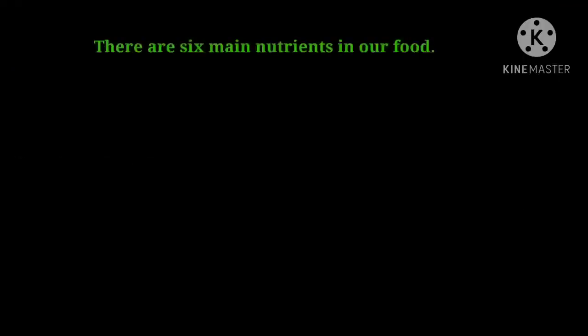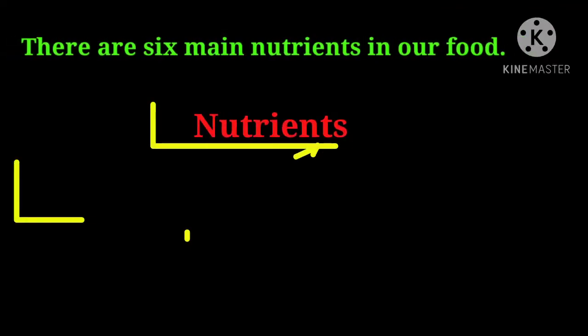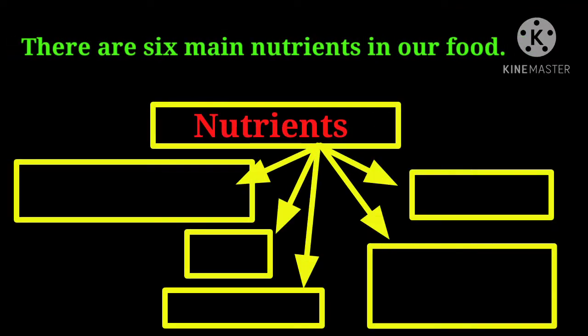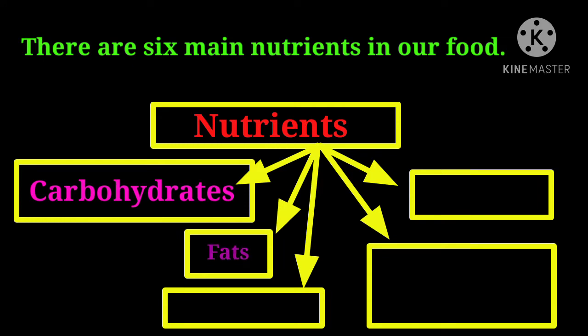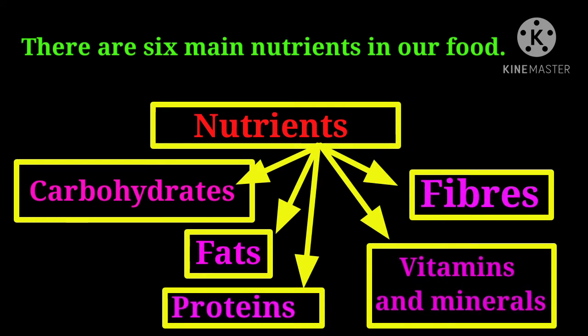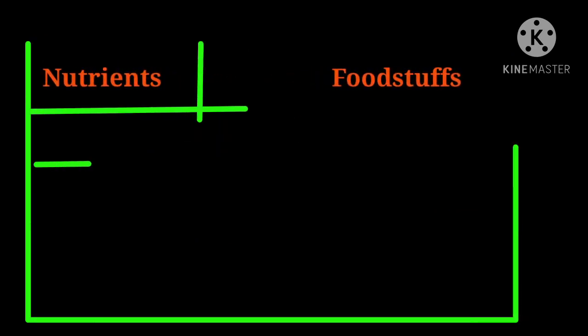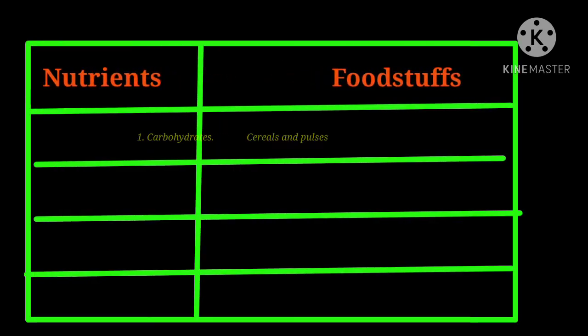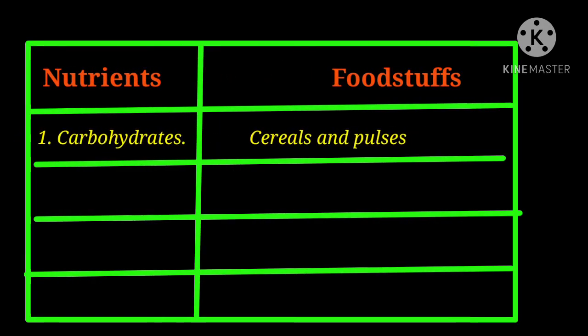There are six main nutrients in our food: carbohydrates, fats, proteins, fibers, vitamins, and minerals. The first one is carbohydrates — we get carbohydrates from foodstuffs like cereals and pulses.